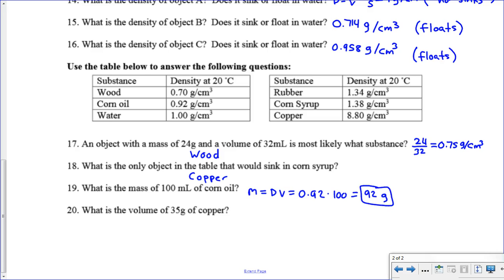For this last problem, it says what's the volume for 35 grams of copper? This one we want volume, volume equals mass over density, which equals 35 divided by 8.8. You should get 3.97 when you do that, 3.97 centimeters cubed.